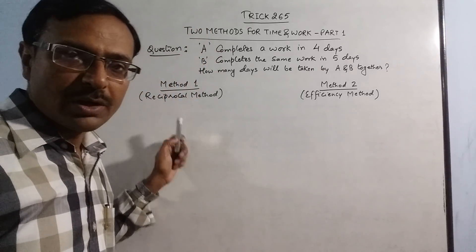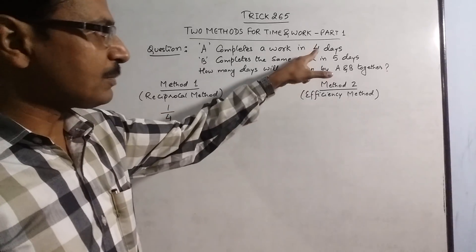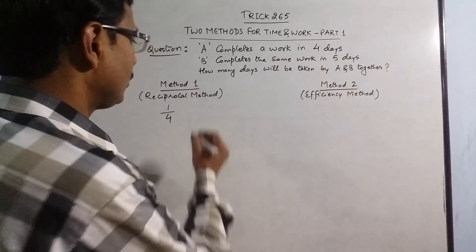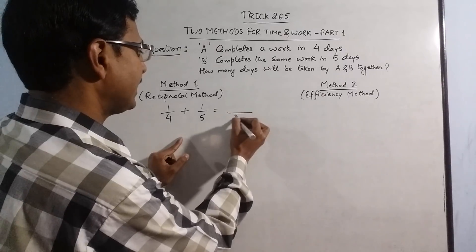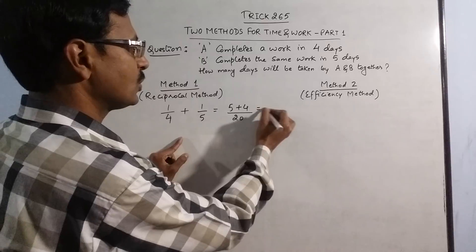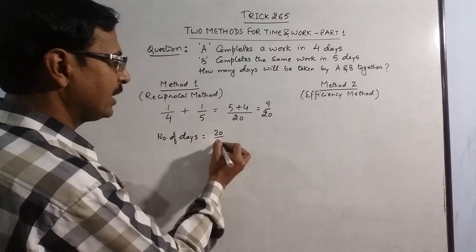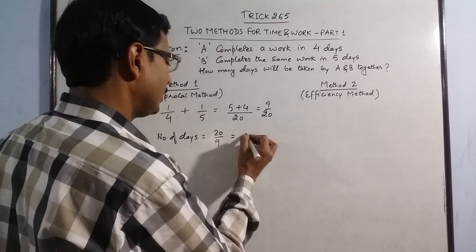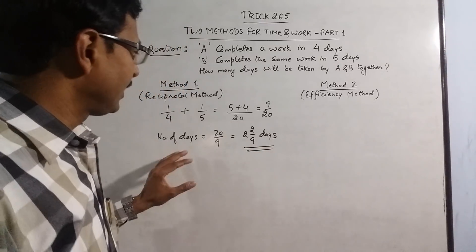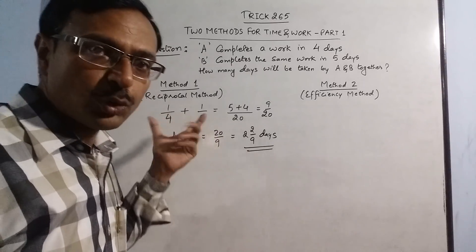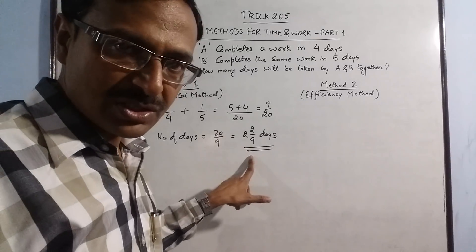The first method is called the reciprocal method. In the reciprocal method, take the reciprocal of the total number of days taken by A — that is 1/4 — and take the reciprocal of 5 also, that is 1/5. Since they work together, we add the two. Adding gives LCM 20, so 5 plus 4 = 9 upon 20. The number of days taken by A and B together: just take the reciprocal, which is 20/9. Converting to a mixed fraction gives 2 and 2/9 days. This is the first method — sum the two fractions, take the reciprocal, and convert to a mixed fraction.